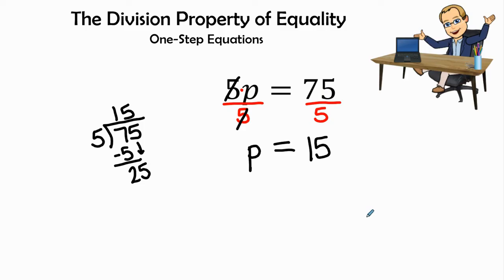75 divided by 5 would be 15. Therefore, p equals 15 will be our answer. Just remember when you're solving one-step equations, you're going to look and see what type of property of equality that you have, whether it's the division property of equality in this example.